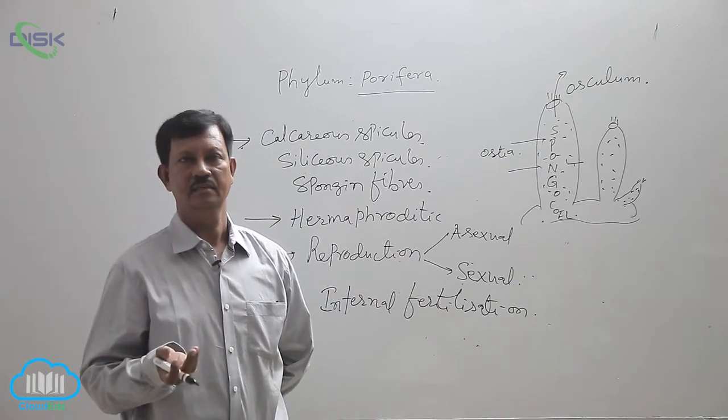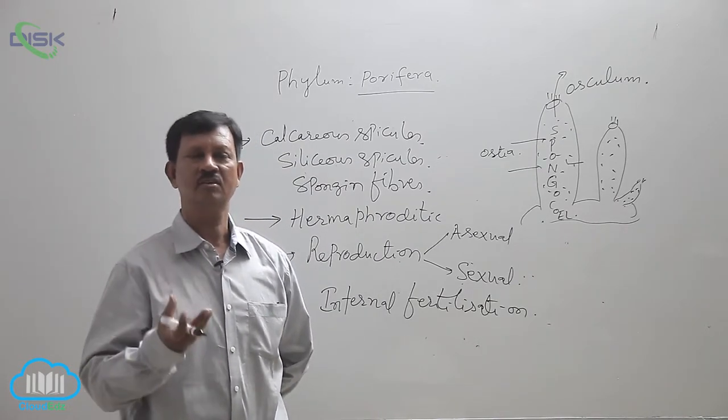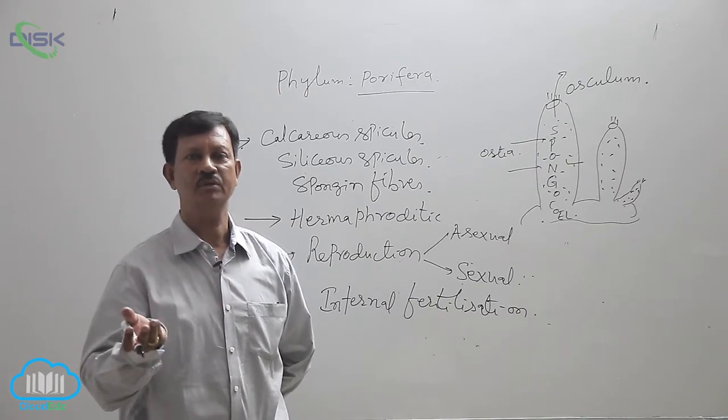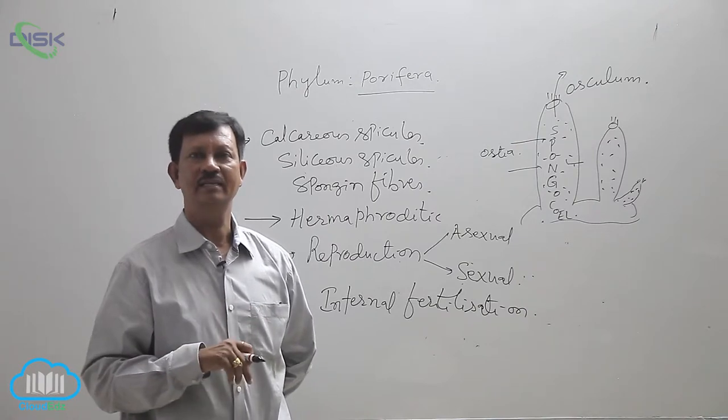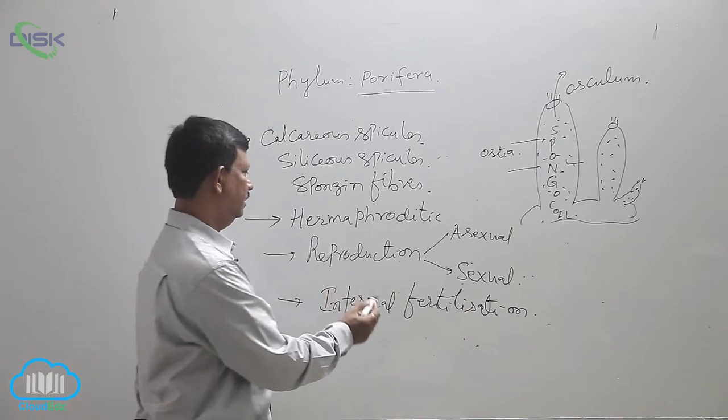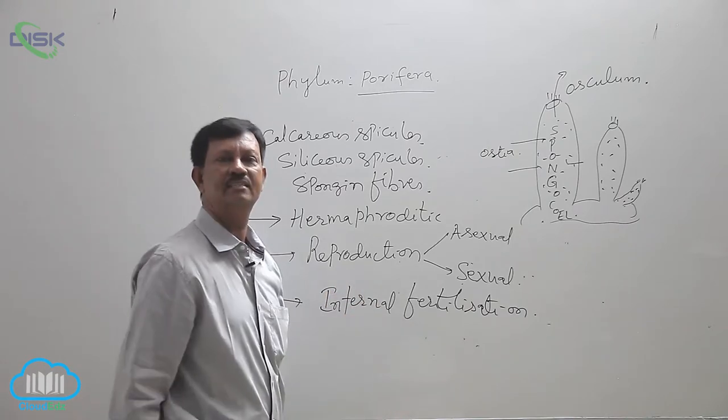The organisms produce the male gametes and release them into the water. And these gametes are immersed into another sponge, and ovum and sperm fuse and form the zygote. Such type of fertilization is known as internal fertilization.